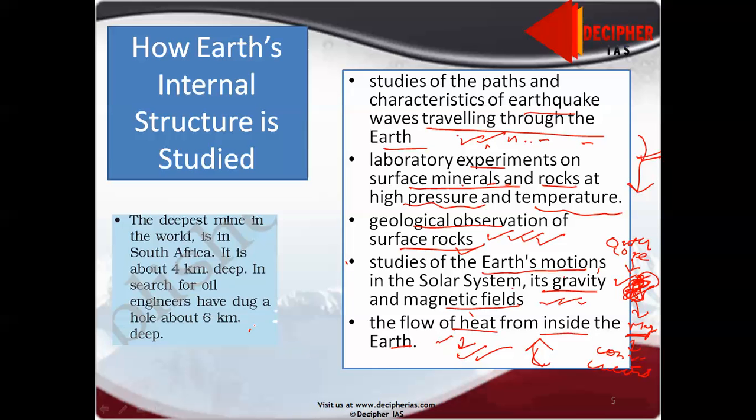We have sources like volcanism and hot springs where heat comes from lower parts to upper parts. We can find out inner minerals present. In asthenosphere we have magma. When volcanic eruption occurs, magma comes out and becomes lava when it contacts air, then solidifies on the volcano. We take the layer of this rock and study it in the laboratory. The deepest mine in the world is in South Africa, 4 km deep. In search of oil, engineers have dug 6 km deep.